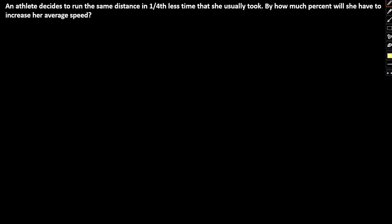Let's take a look at another question. An athlete decides to run the same distance in one-fourth less time than she usually took. By how much percent should she increase her average speed? Here, one thing is said: distance remains constant. So the initial time is t, and the final time is one-fourth less. So one-fourth less is t minus 1/4t, which equals 3/4t.